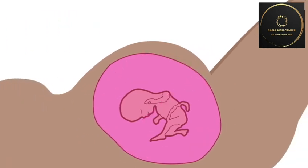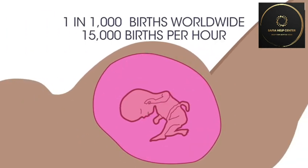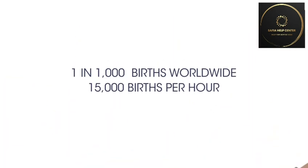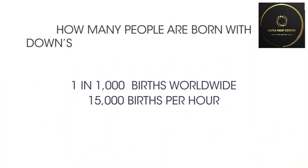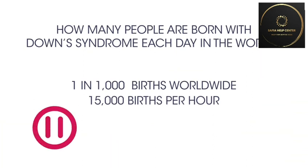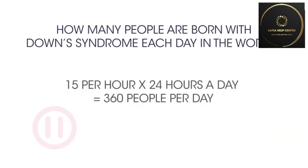The estimated incidence of Down's syndrome is about 1 in 1000 births worldwide. There are about 15,000 births per hour in the world — so how many people are born with Down's syndrome each day in the world? Pause the video while you work it out. So now you know a little more about what Down's syndrome is, what causes it, and just how common it is.